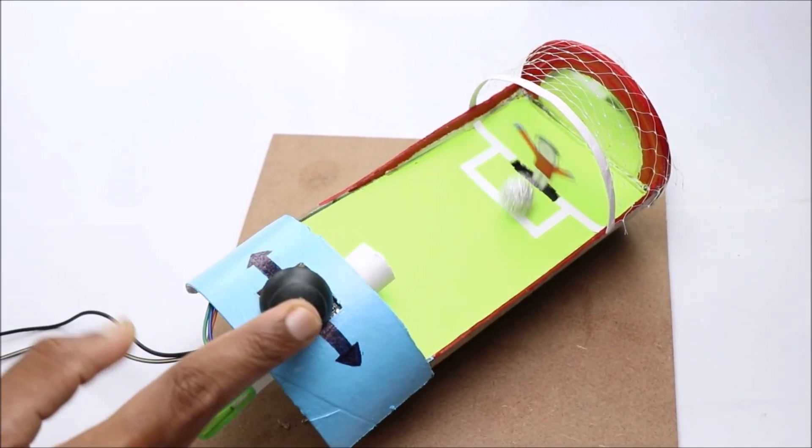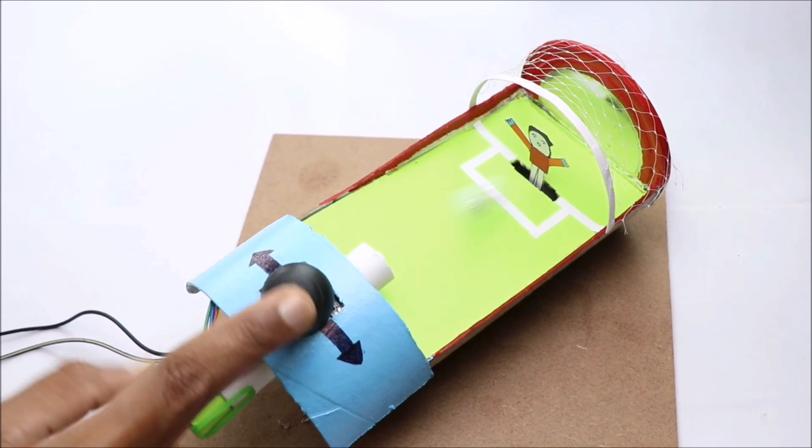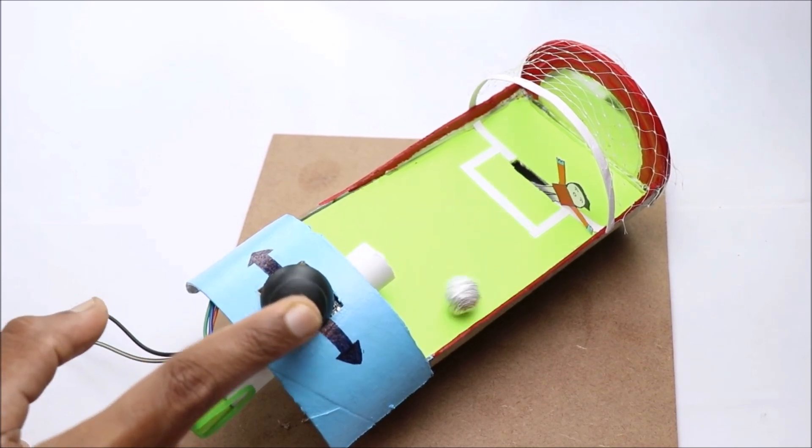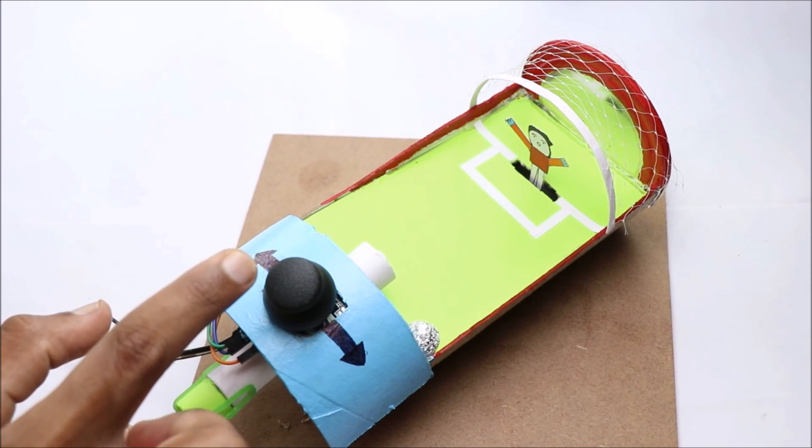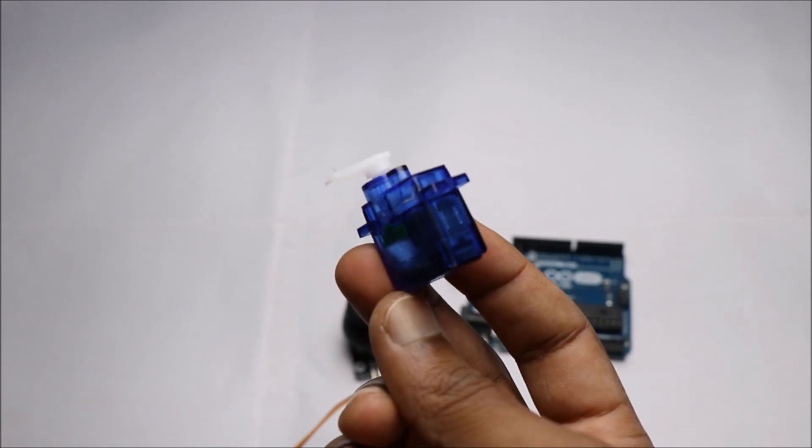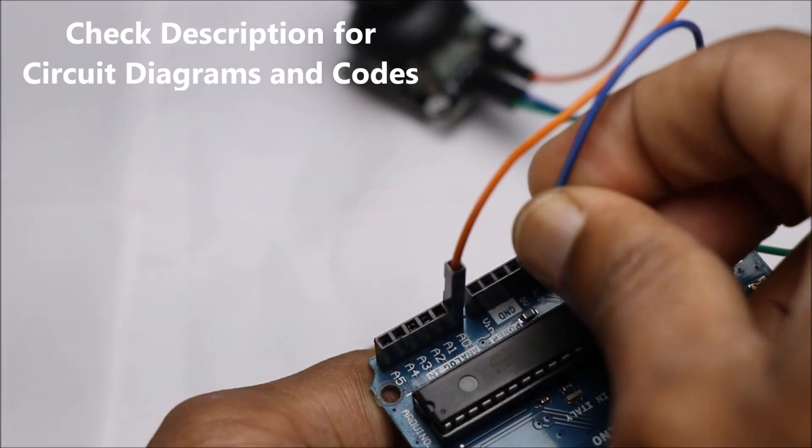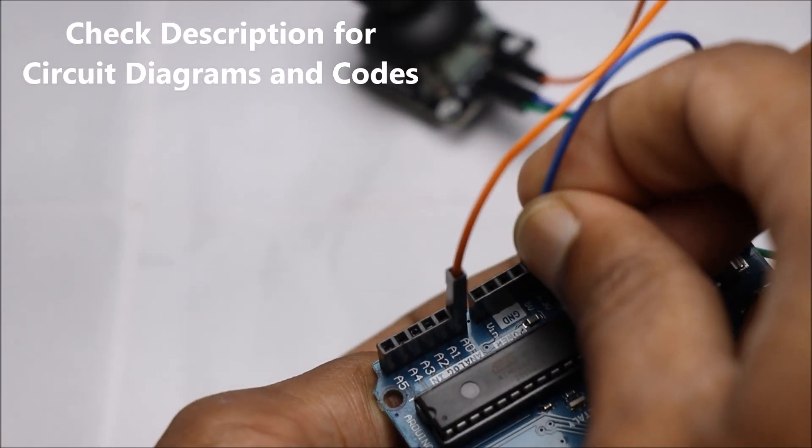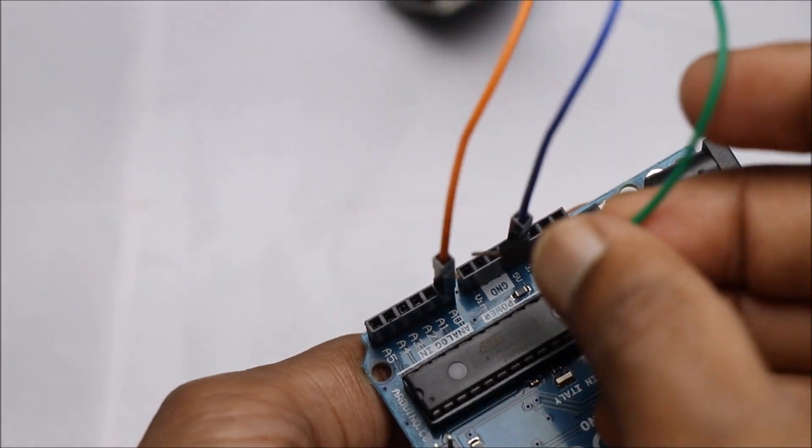Hello creators, in this video I will show you how to make two-player soccer game using Arduino. For this project you will need Arduino Uno, joystick module, and microservo. For the circuit diagram and Arduino code for this project, check out the description box below.